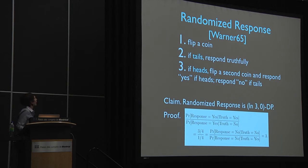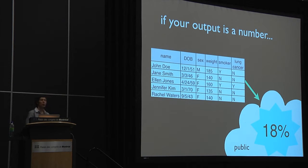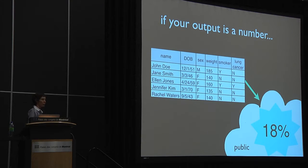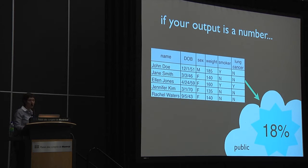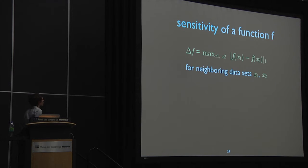Going back to trusting the mechanism — from the perspective of the trusted analyst who wants to compute and release a statistic, like the percentage of people in the database with cancer, the natural thing is to compute the statistic and add some noise. The question is: what noise, what shape, and how much? The useful notion here is the sensitivity of a function — how much can the value of that function change between any two neighboring databases? This is a worst-case notion: over all possible neighboring databases, how much can the function change?